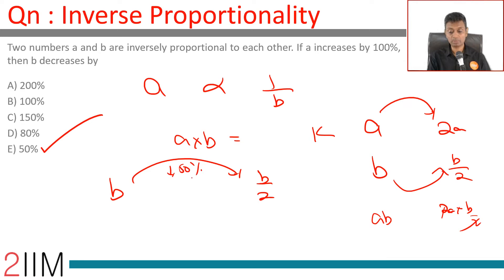Or b should fall by 50%. Just make sure you're not saying a increases by 100% that means b decreases by 100%. b decreases by 100% would go to zero, when the thought, that's not relevant, that's not the inverse proportionality that we are talking about.